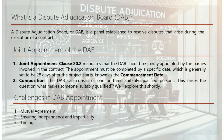Joint Appointment of the DAB: Clause 20.2 mandates that the DAB should be jointly appointed by the parties involved in the contract. The appointment must be completed by a specific date, generally set to be 28 days after the project starts, known as the commencement date. This ensures the DAB is in place early to address any disputes that might arise promptly.